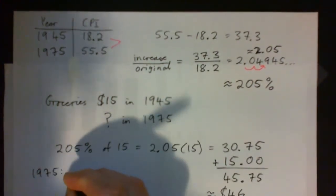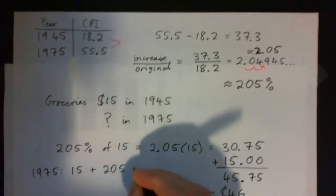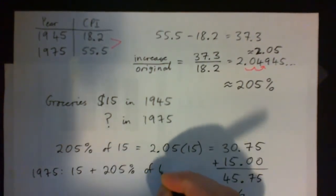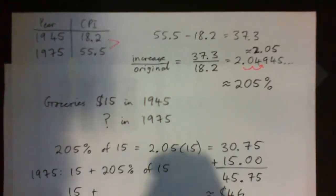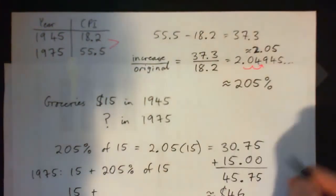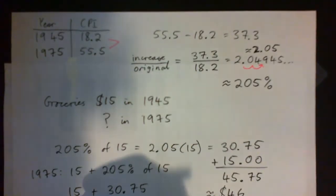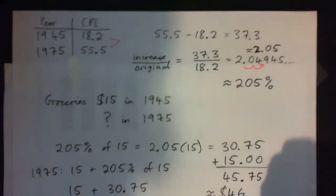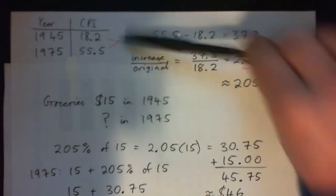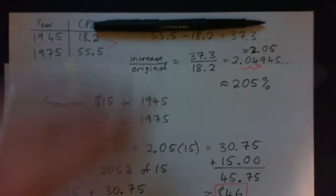What does it cost in 1975? It's going to cost the 15 dollars plus the increase of 205 percent of 15. The increase amount is 30.75 and that gives us 45.75, and we round that to 46. So in 1975, your 15 dollar basket of groceries would cost approximately 46 dollars.